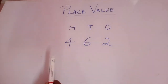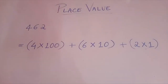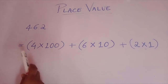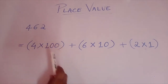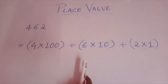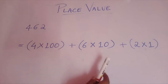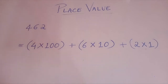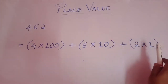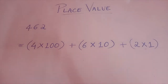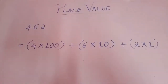Is it clear children? With the help of place value, let's try to break this number. As 4 lies in the hundreds place, we can write 4 times 100. As 6 is in the tens place, we add 6 times 10. And as 2 is in the ones place, we add 2 times 1. So this is how we break a number according to its place value.